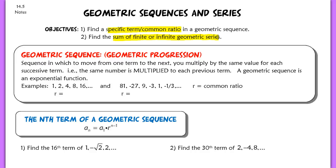Let's start with the definition of a geometric sequence, also known as a geometric progression. This type of sequence is one where, in order to move from one term to the next, you have to multiply by the same value for each successive term. That same number is multiplied to each previous term. We call that multiplier the common ratio, r, and that is the number we're multiplying each successive term by.